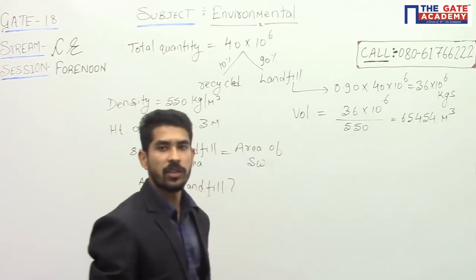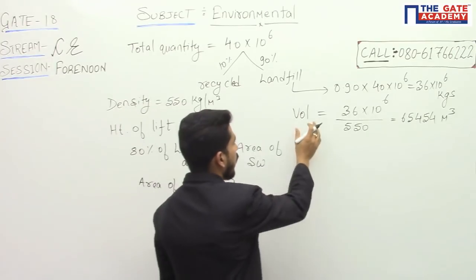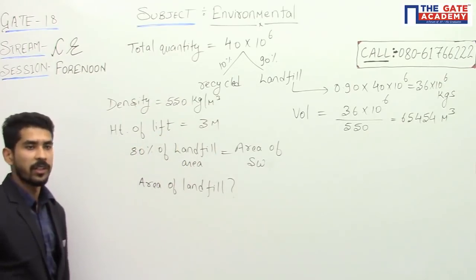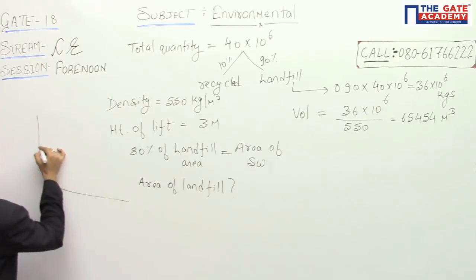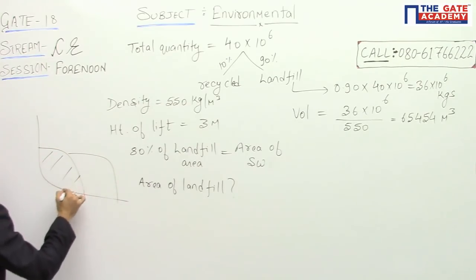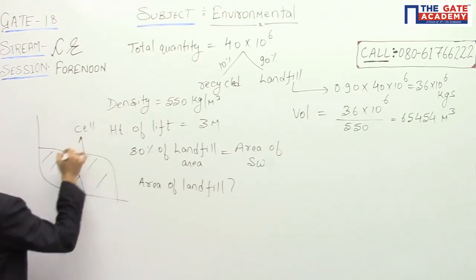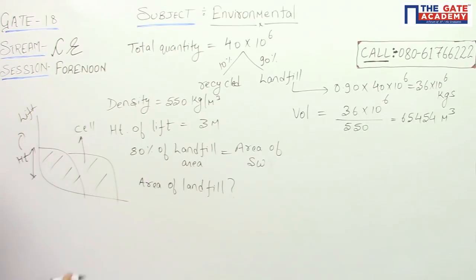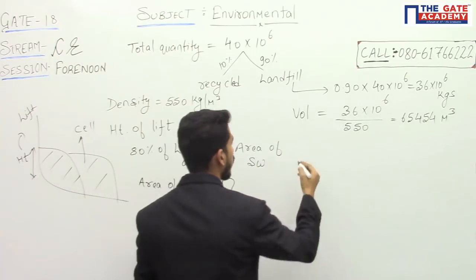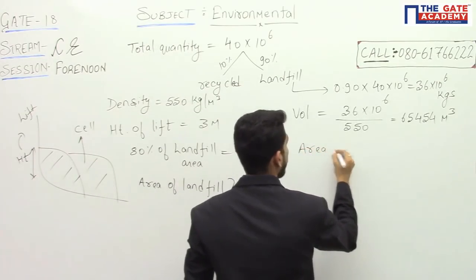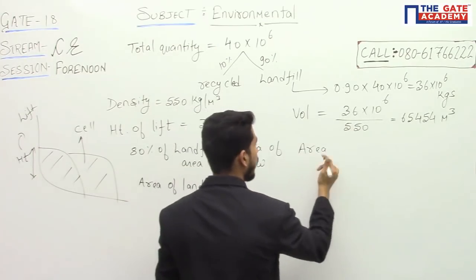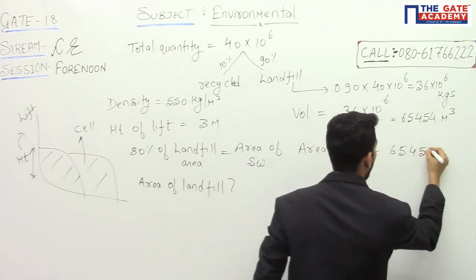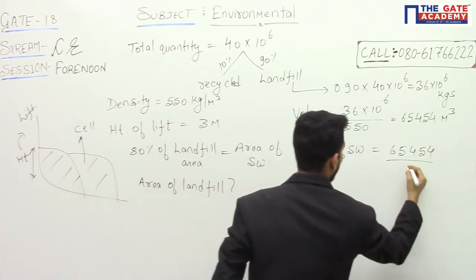We have the volume of solid waste. The height of the lift is 3 meters — inside the landfill, this section is known as a cell, and the height of the cell is known as the lift. Since we have the height, we can calculate the area. The area of solid waste equals the volume divided by the height of the lift, which is 3 meters.